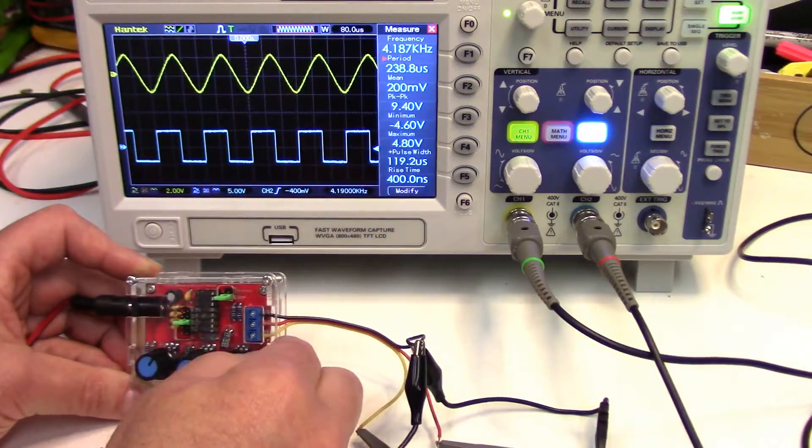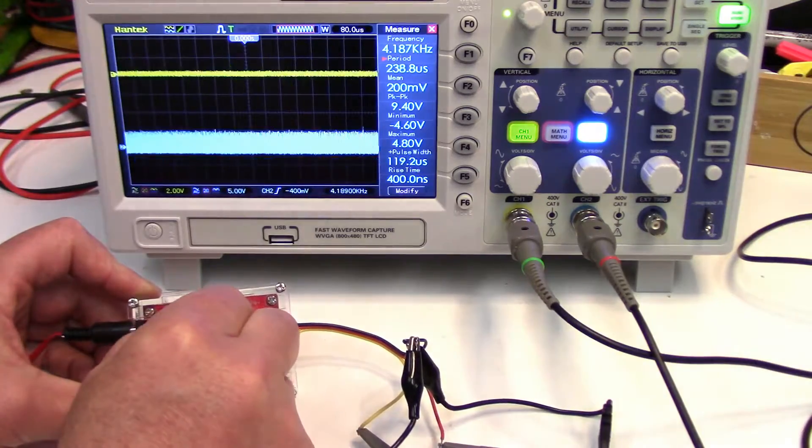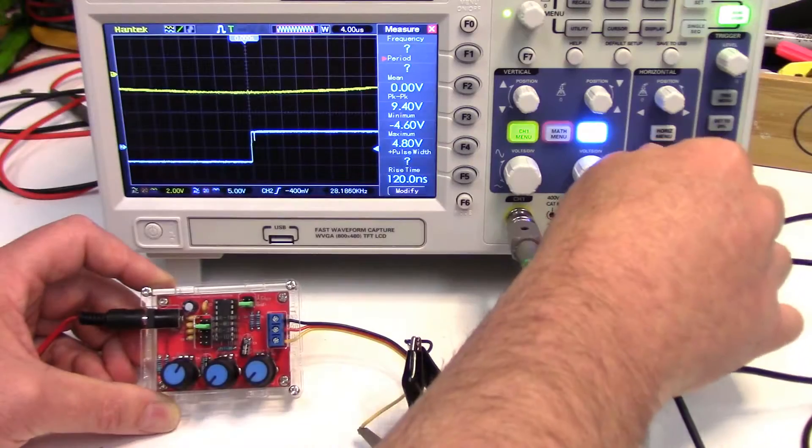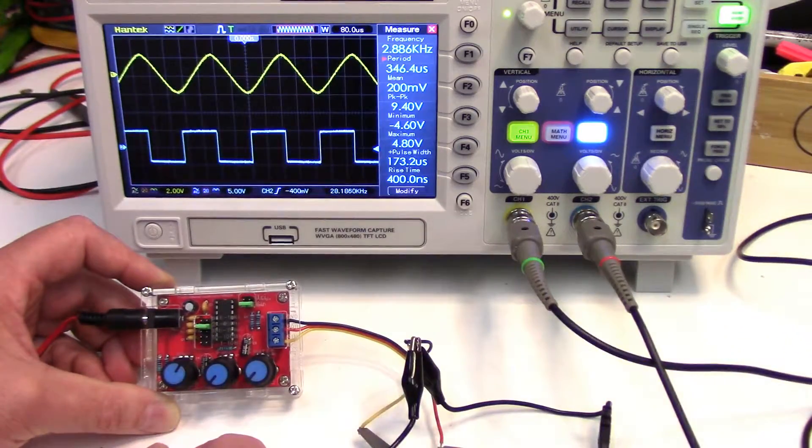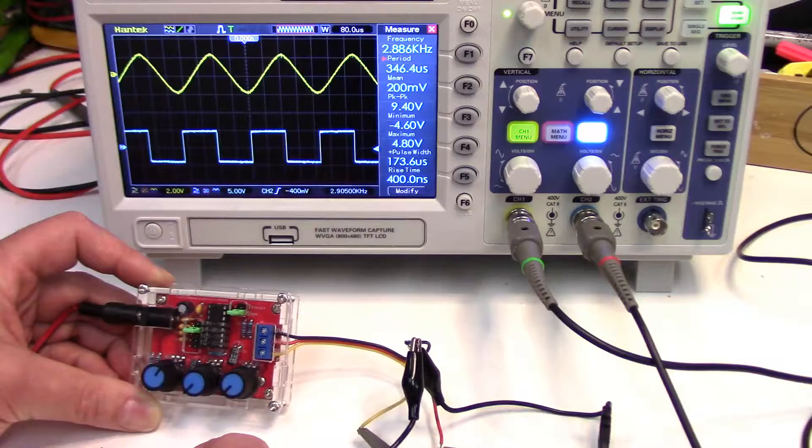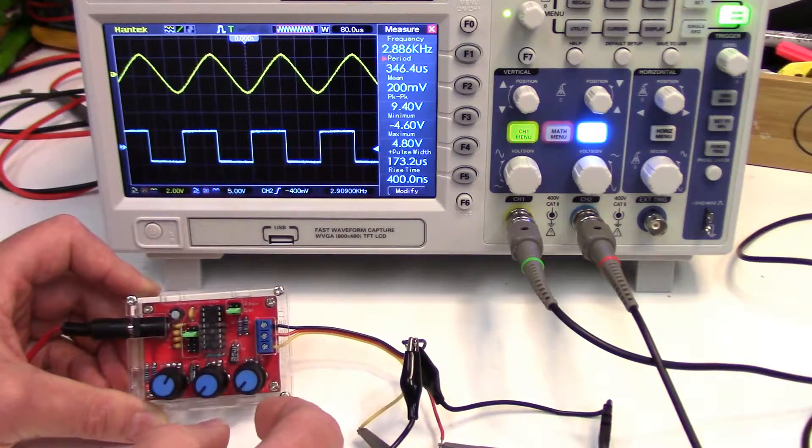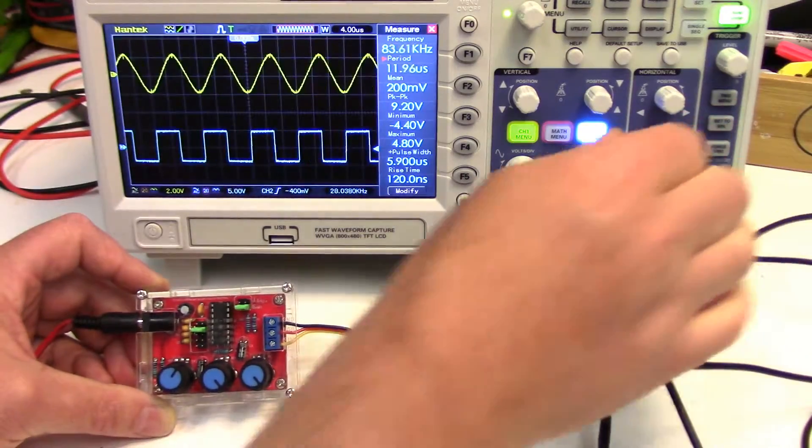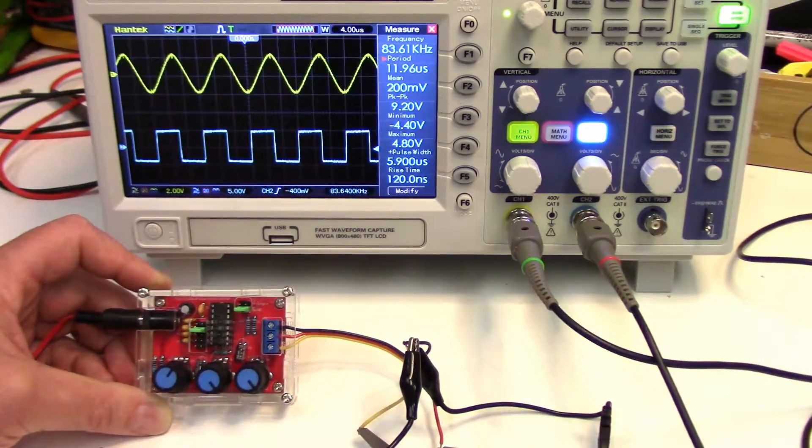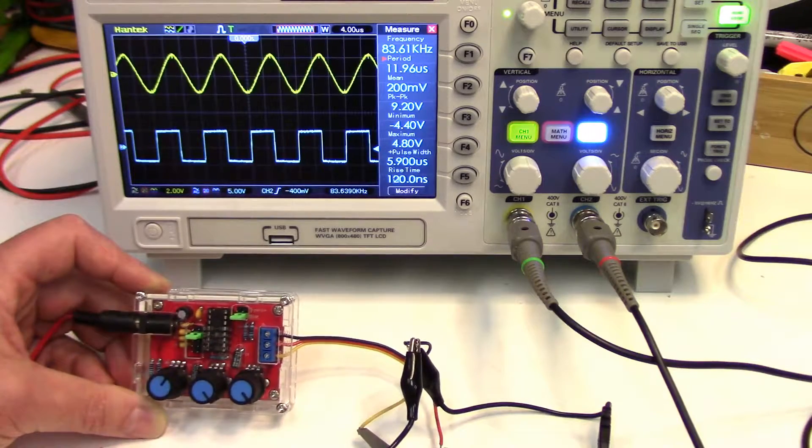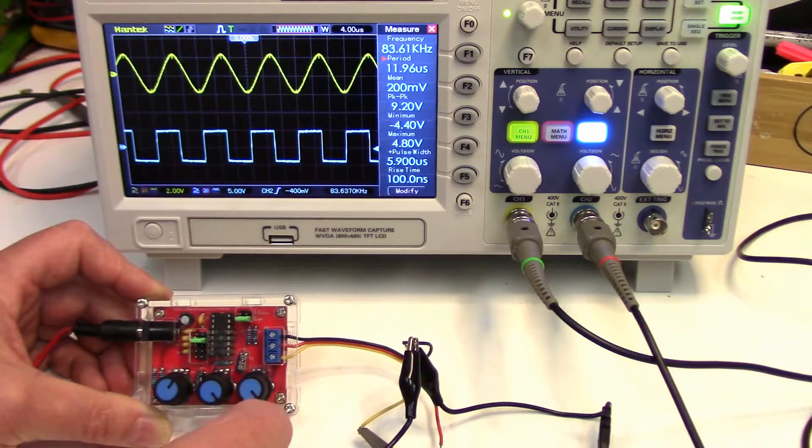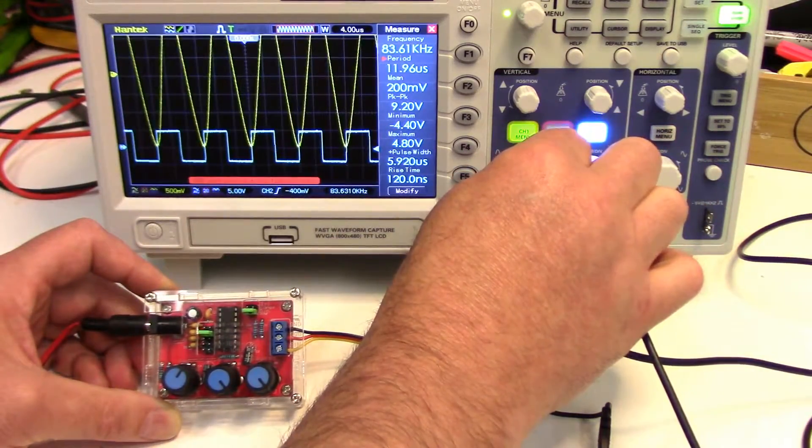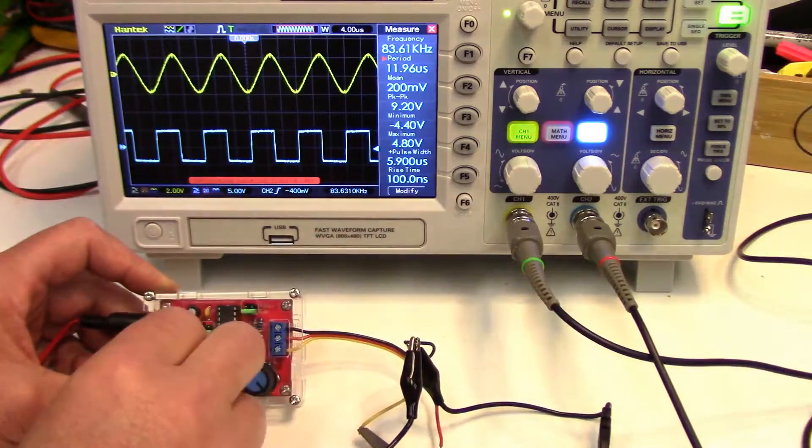So let's do, what's the next one? 3k to 65 kilohertz. So I'll dial them right down again. Oops, should have done that first. And we're at 2.8 kilohertz. So that's certainly right around our 3k. And we'll dial it right up. And we're at 83 kilohertz. So that's a bit over our 65, but certainly within the range. Getting a little noise there. That's interesting.